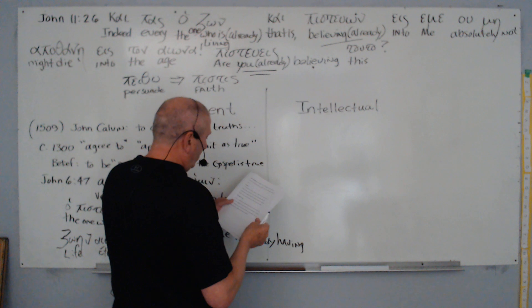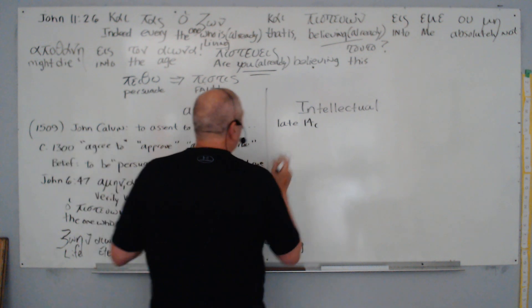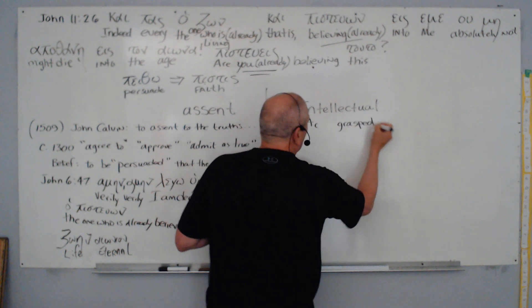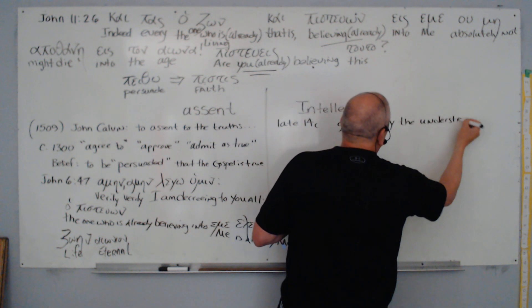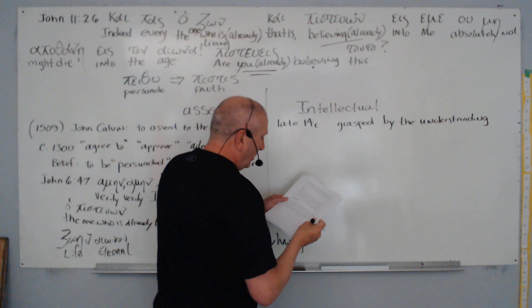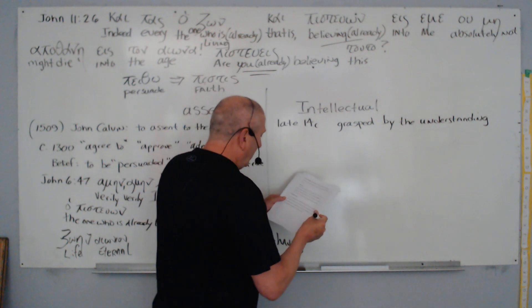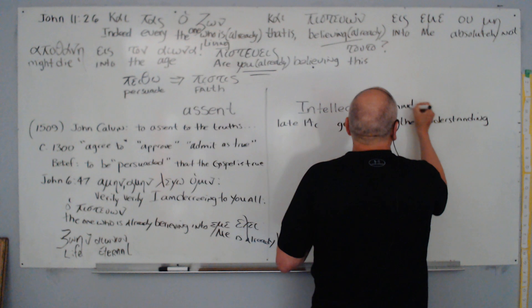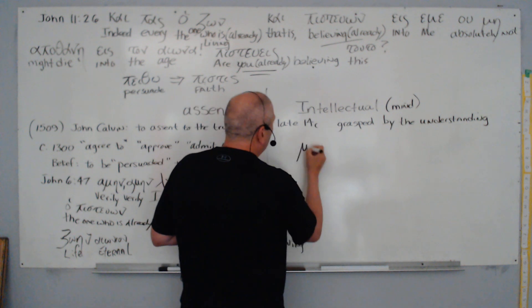We've learned 'persuade.' We have 'intellectual,' which is somewhere in the late 14th century. John Calvin had knowledge of that word. 14th century refers to something grasped by the understanding—by the understanding. It's an adjective, rather than by the senses—that is, feelings, experiences. This is grasped by the understanding, relating to the understanding. This is about our mind.